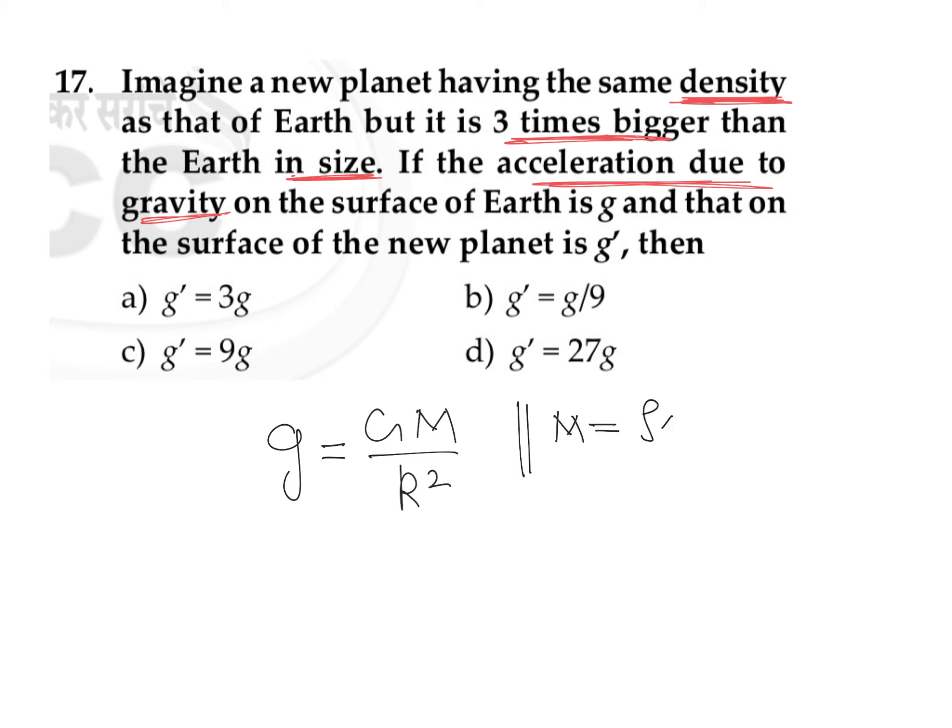We can write mass is equal to density into volume, as density is mass by volume. So we can write this mass is equal to density into volume, which is 4 by 3 pi R cube.